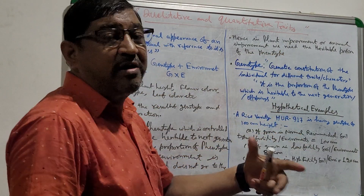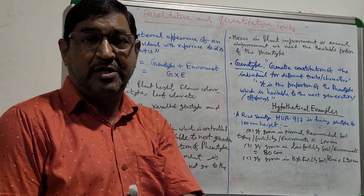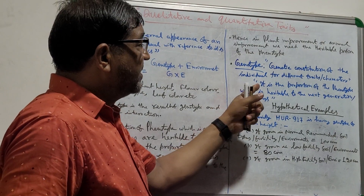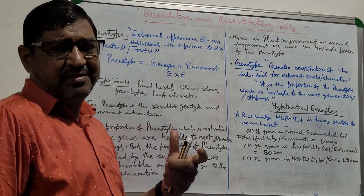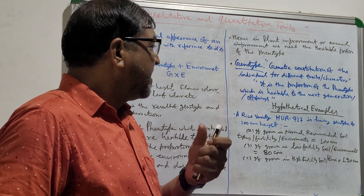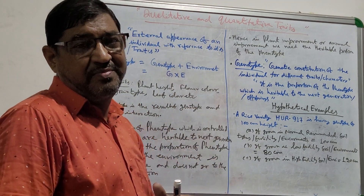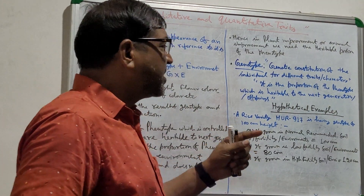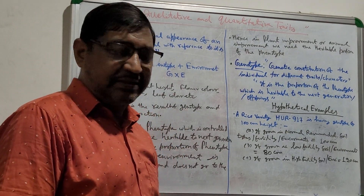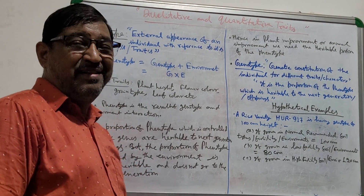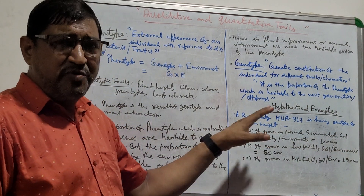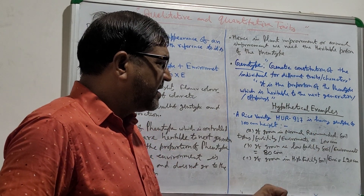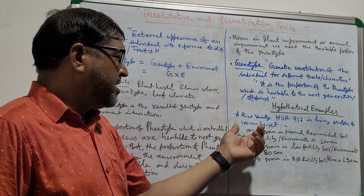In plant improvement or even animal improvement, we need the heritable portion of the phenotype for improving the plant or animal. The genotype is the genetic constitution of the individual for different traits or characters. It is also the proportion of the phenotype which is heritable to the next generation or offspring. To understand well, I am putting a hypothetical example: say a popular variety of rice — Banaras Hindu University rice 917 — having a genotype of 100 centimeter plant height.